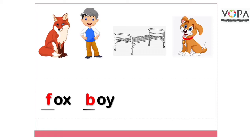Boy. अब ऊपर हमें पता है क्या है — caught है। अब caught की शुरुआत, बच्चों सोचो, 'क' से होगी या 'c' से होगी? बच्चों हमें पता है कि 'c' का जो sound होता है, 'c' की जो आवाज होती है, वो भी 'क' होती है, इसलिए यहाँ पर आएगा c — caught।